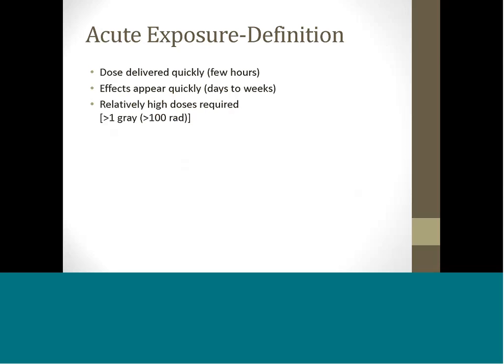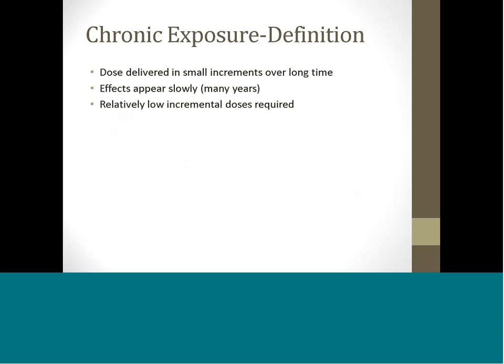Extremely high doses of several thousand rad will produce effects that appear in a few hours. Chronic exposure results from many small doses of radiation delivered over a long period of time. Since much biological repair occurs during the time of exposure, any effects that appear will take many years to develop. If the exposure occurs continuously over many years, relatively low incremental doses may ultimately produce observable effects.